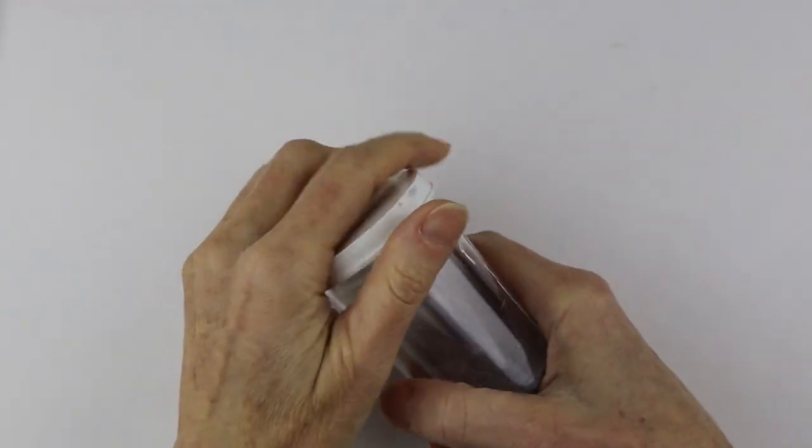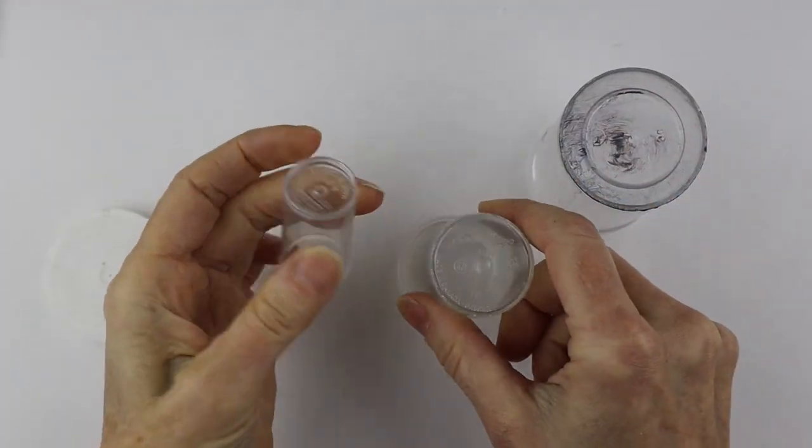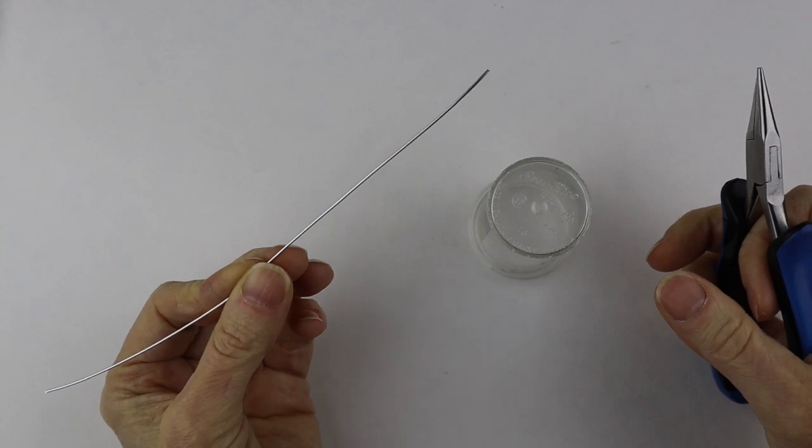For easy storage, you can take pill bottles and stack them together like a little babushka doll.